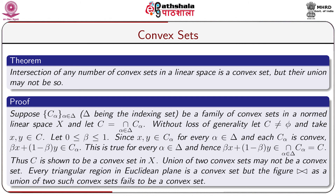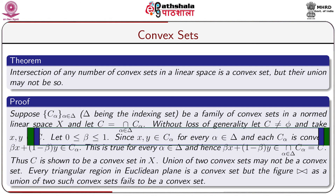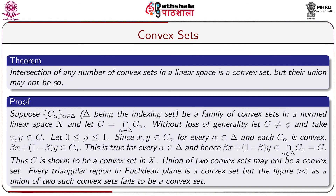Take any two members x and y of C, so x, y ∈ C. Let 0 ≤ β ≤ 1. Since x, y ∈ C = ∩Cα, we have x, y ∈ Cα for every α ∈ Δ. Since each Cα is convex, βx + (1−β)y ∈ Cα for every α ∈ Δ. Hence βx + (1−β)y ∈ ∩Cα = C. Thus C is shown to be a convex set in X.